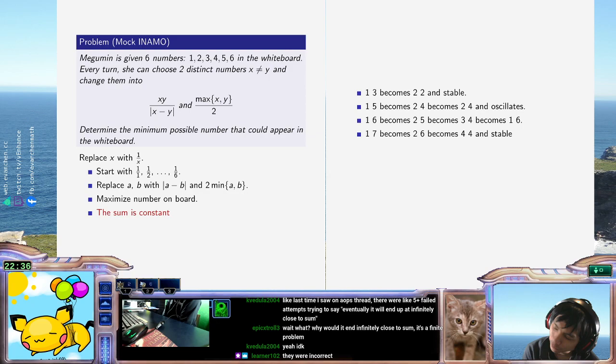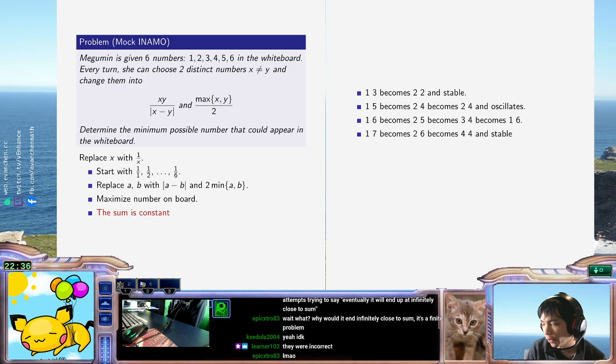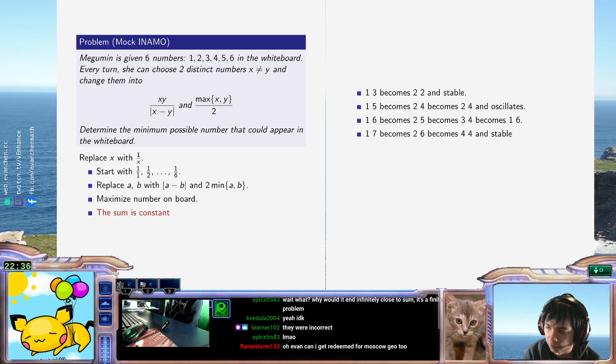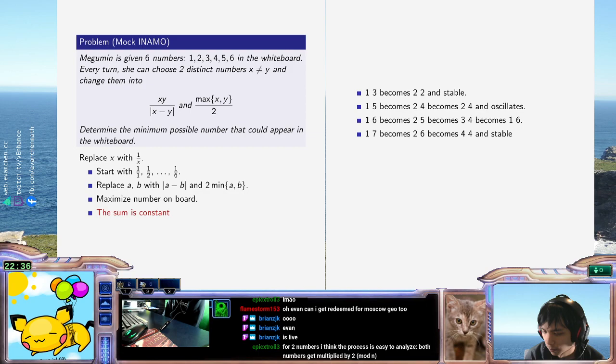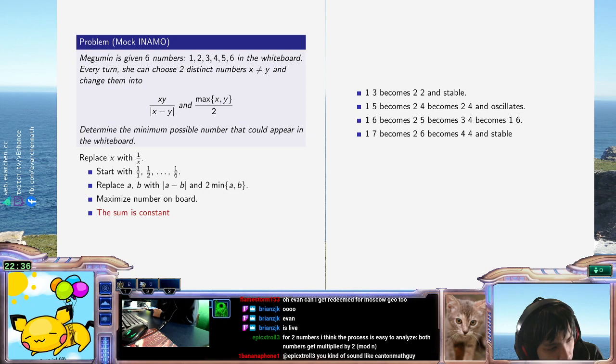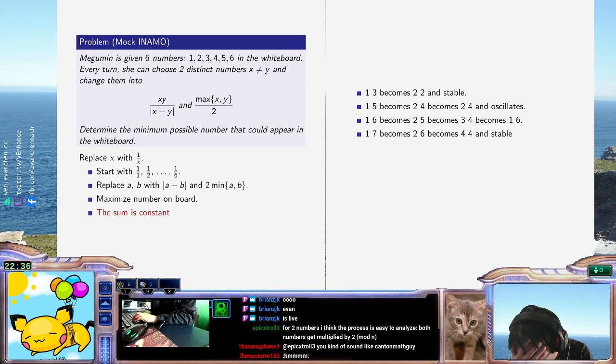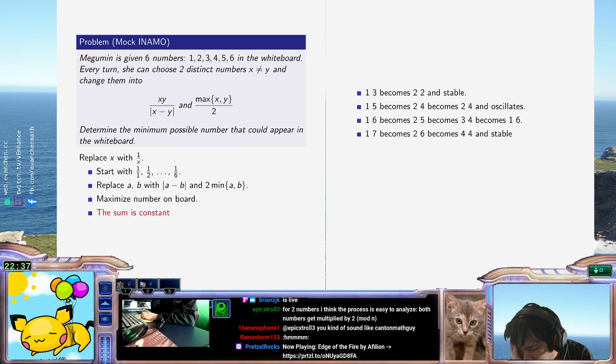It's a finite problem, because if my starting numbers are integers, then all the numbers will always be integers. Similarly here, they're rational numbers with denominator dividing the LCM, which is 60. So I actually don't know what the answer is.